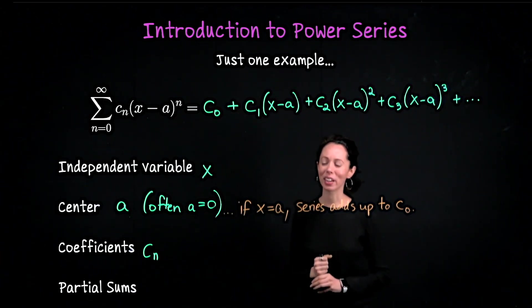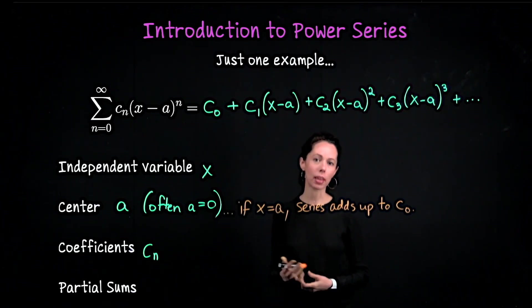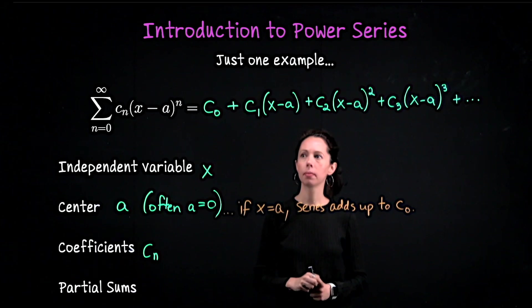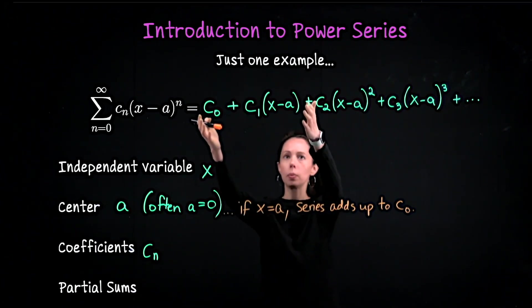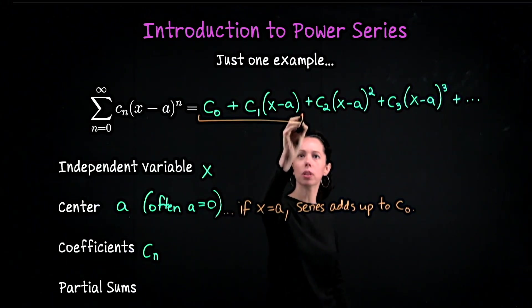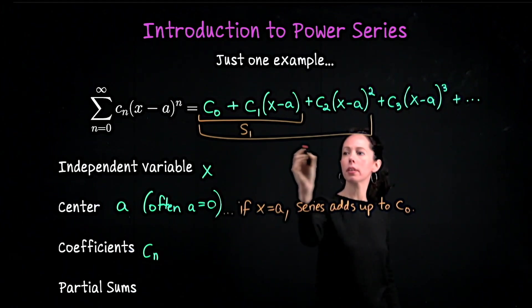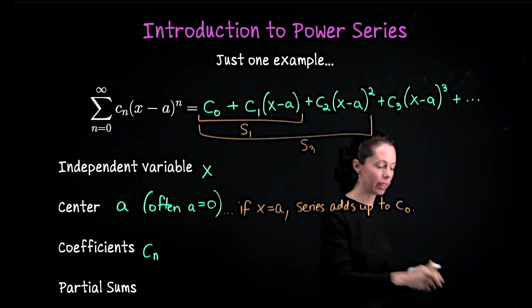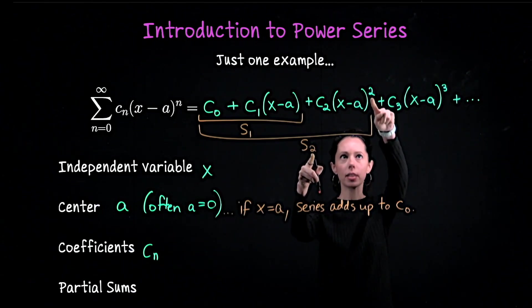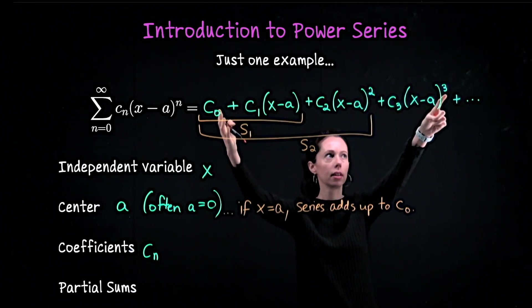The last remark I want to make is that if we're interested in when our infinite series adds up to something, we might want to look at the partial sum. So what are the partial sums for a power series? The first term is just this constant. Then the next partial sum would be these two terms. Notationally, it's more convenient to think of the sum of the first two terms as s_1. And then the sum of the first three terms is s_2, so that this subscript matches this power. That way, the third partial sum goes through this cubic term up here.